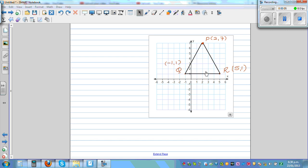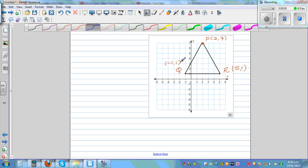This is triangle PQR with the coordinates P at 2 comma 7, Q at negative 1 comma 1, and R at 5 comma 1.